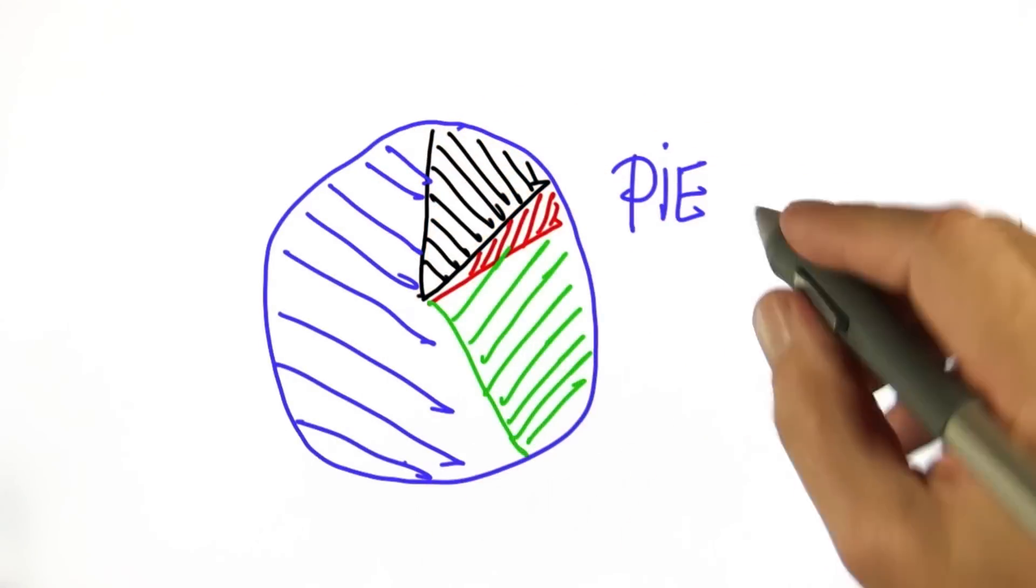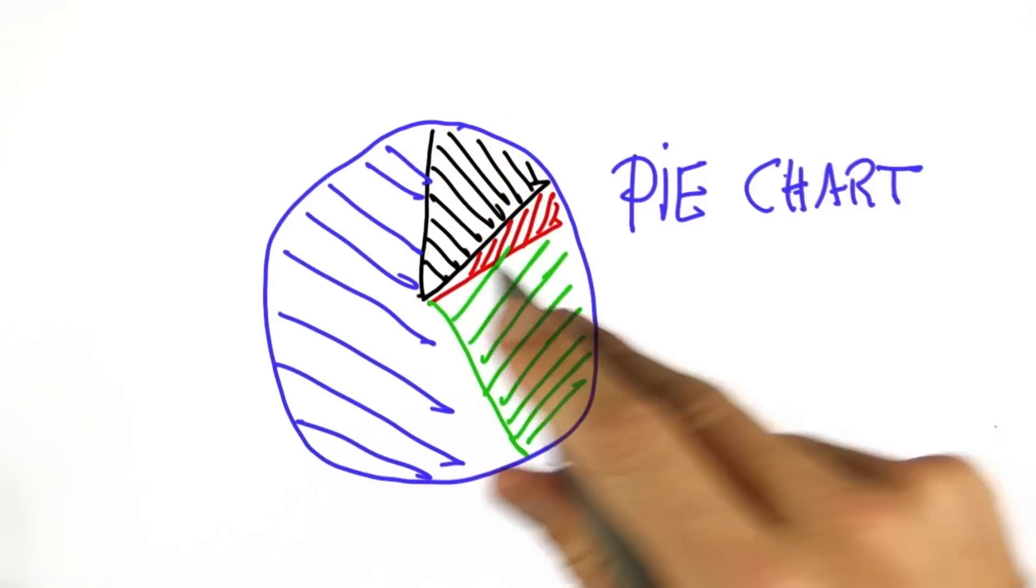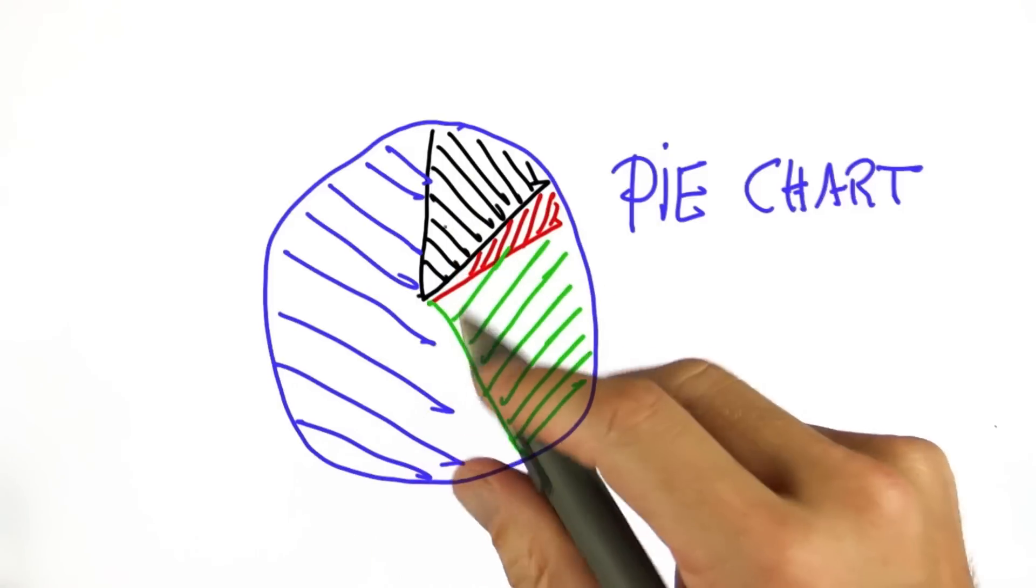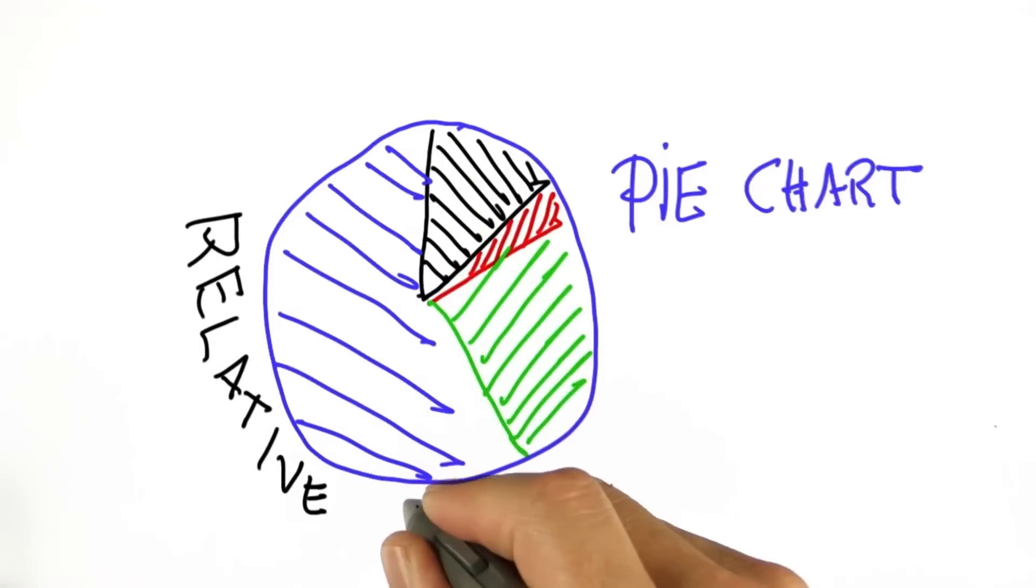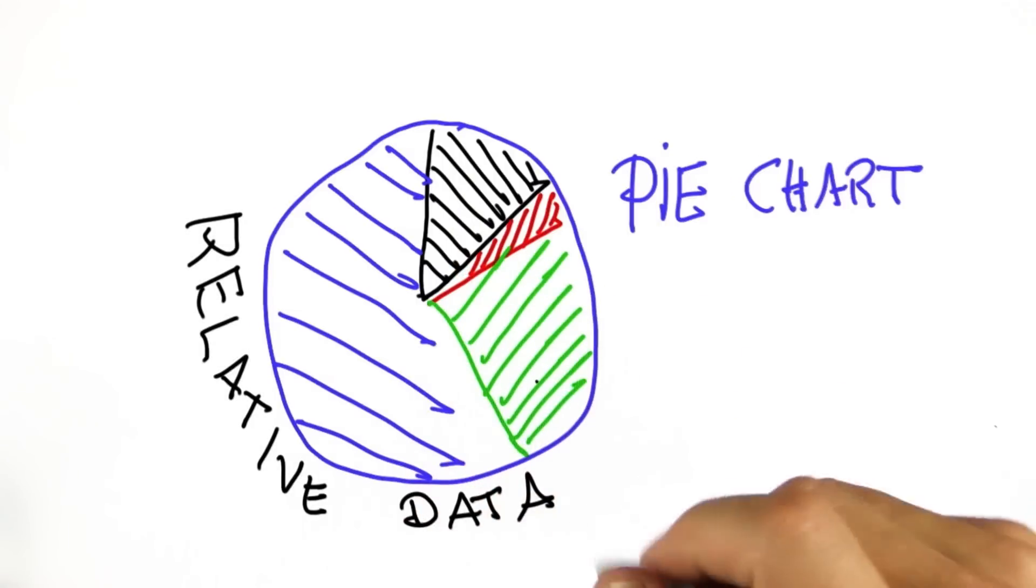So we've just made a pie chart. And in statistics, you use pie charts to visualize data, specifically relative data. And I'll tell you in a second what that means.